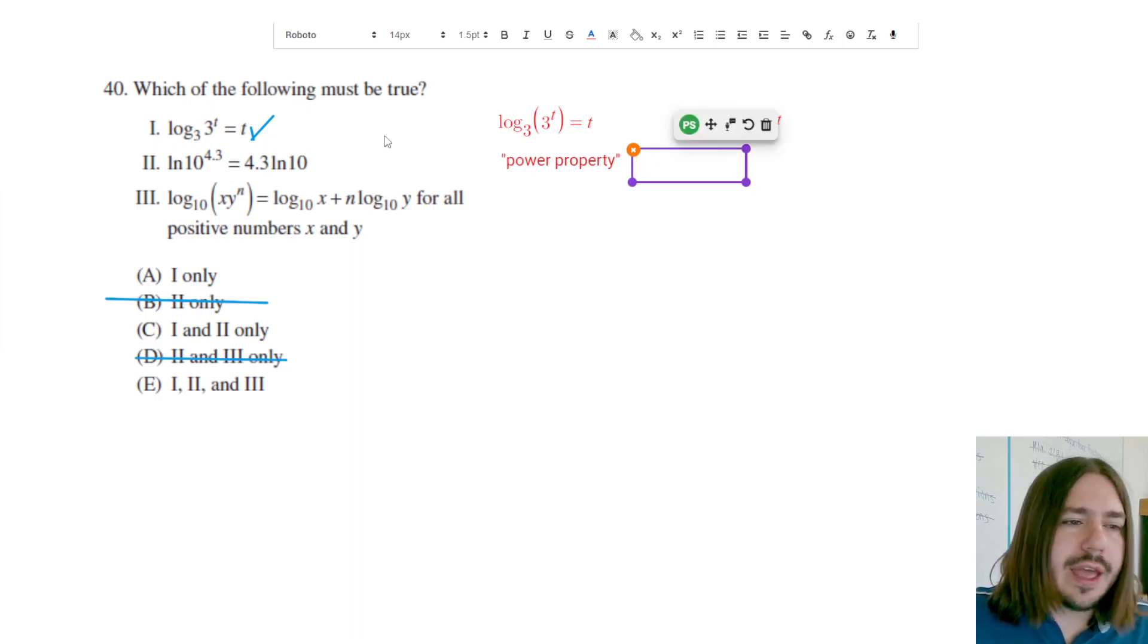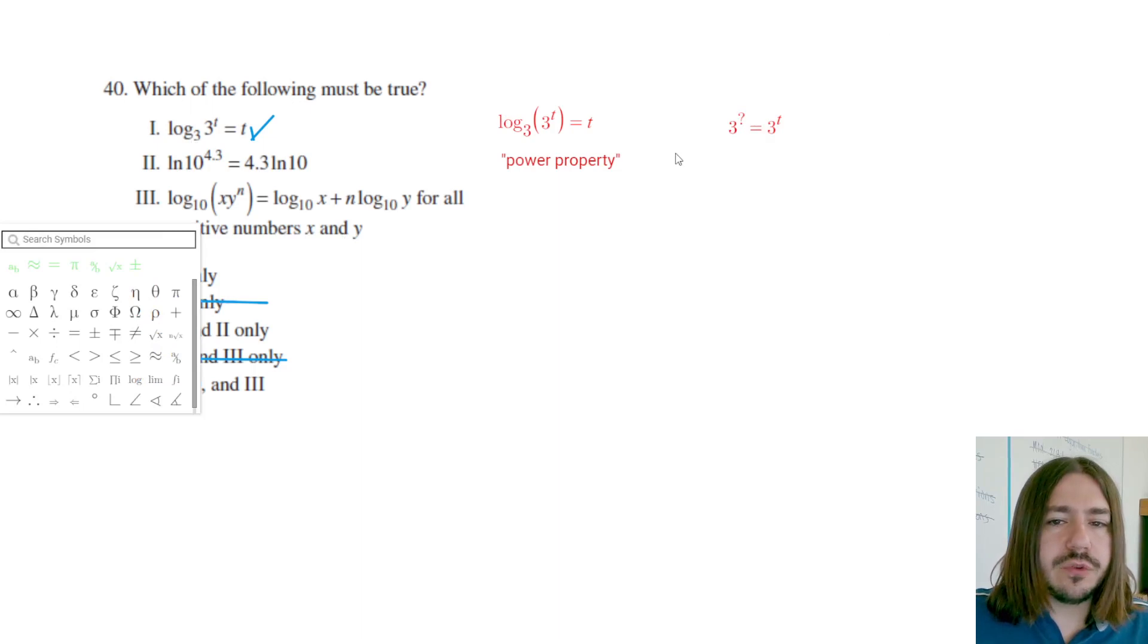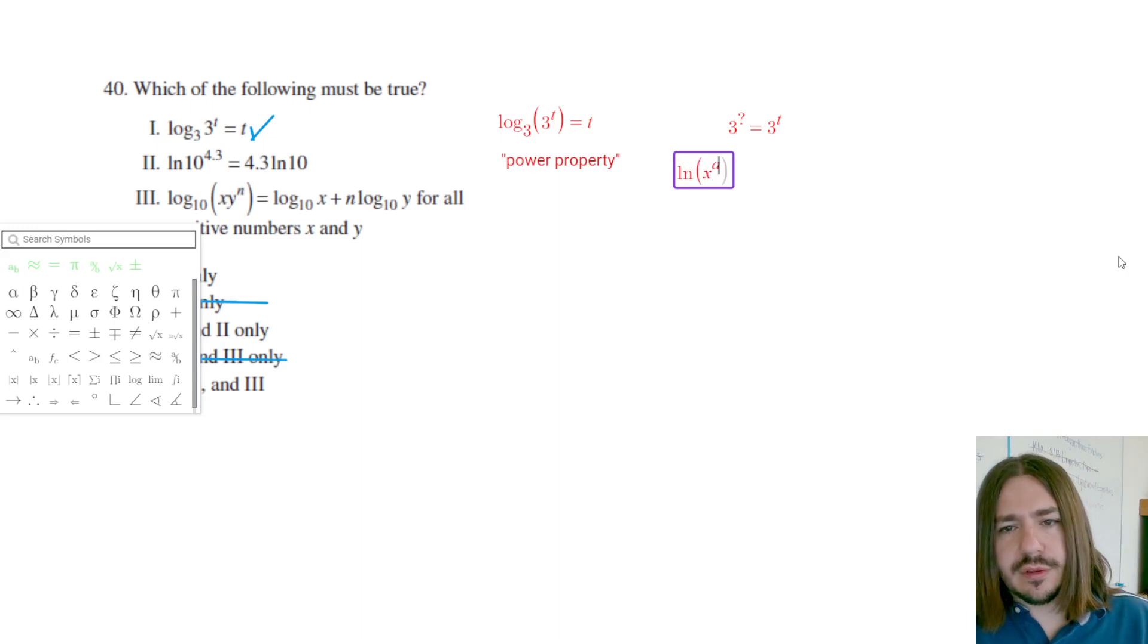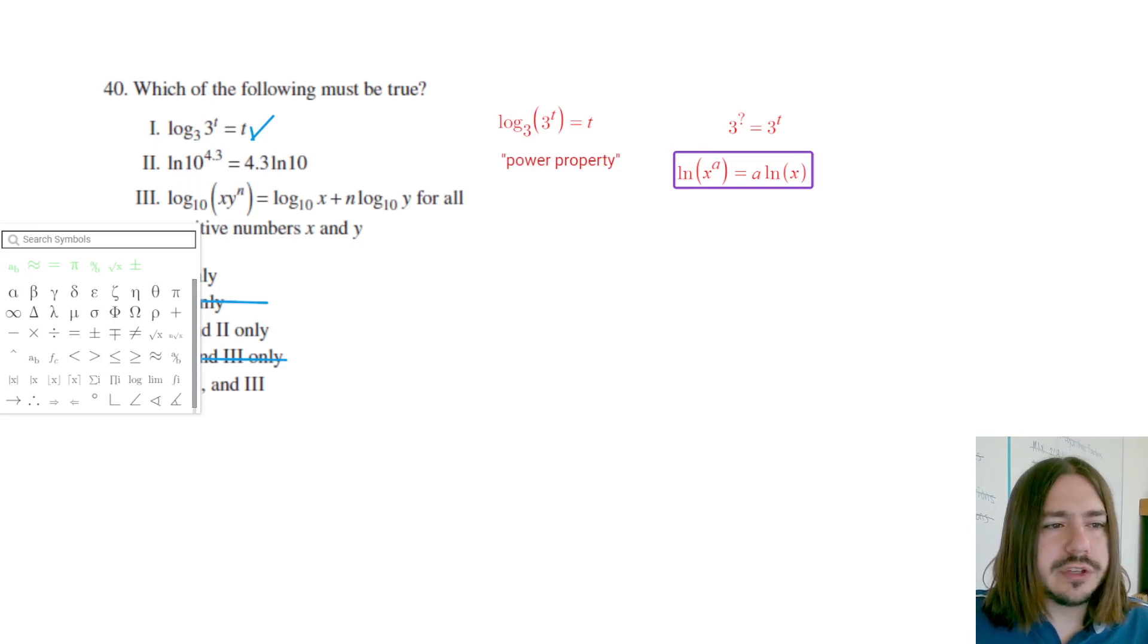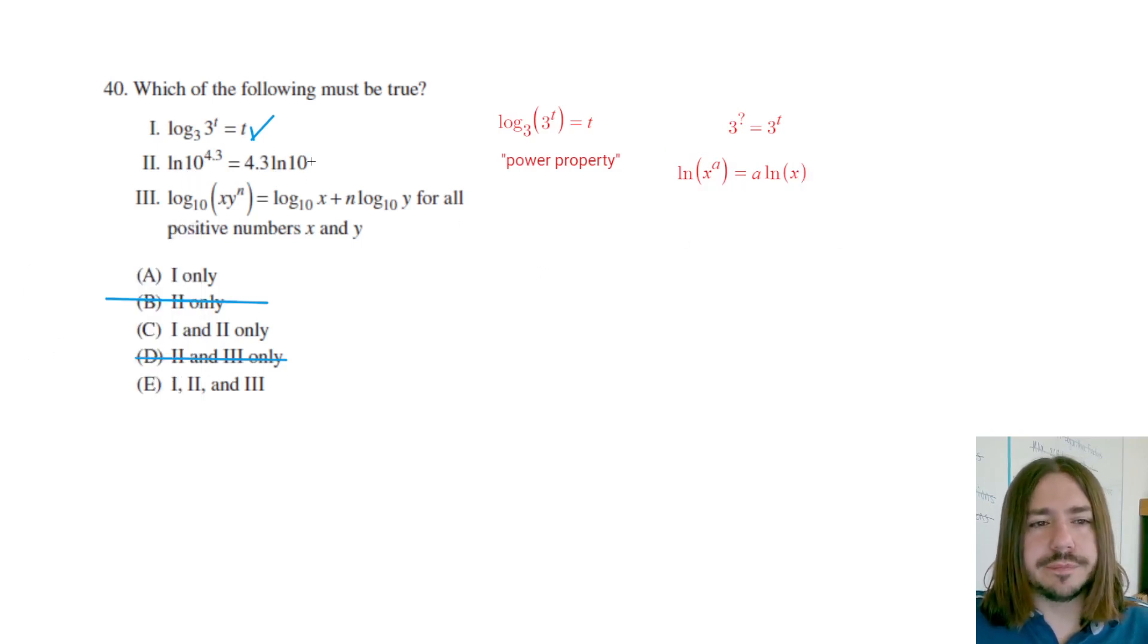Basically what it says is that if you have a log with any base, in this case we're dealing with the natural log, the natural log of any power, we can rewrite that as whatever that exponent is. As long as it's on whatever the argument is here, we can rewrite that as a coefficient. This is always going to be true, and you can see number II here is really just a direct application of that property. So as long as you know that property, you should be able to get that one right. So II is correct, or it's true.